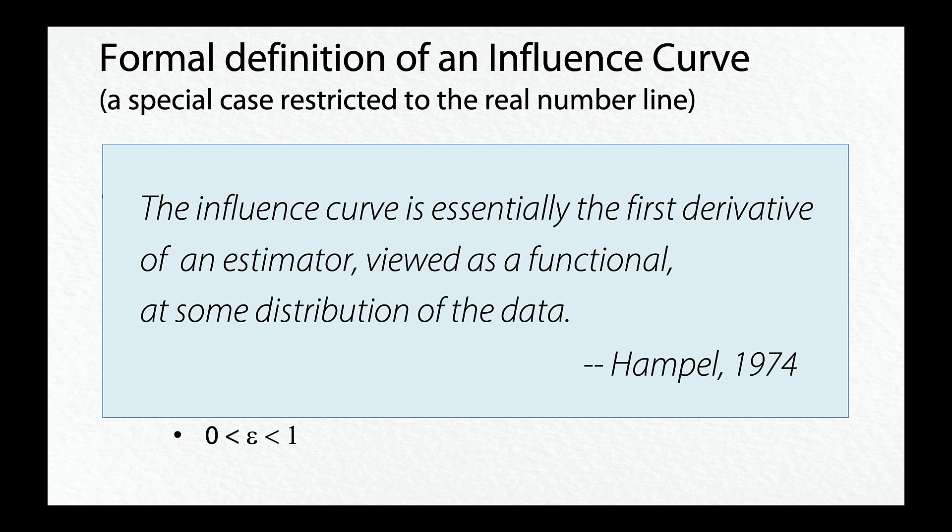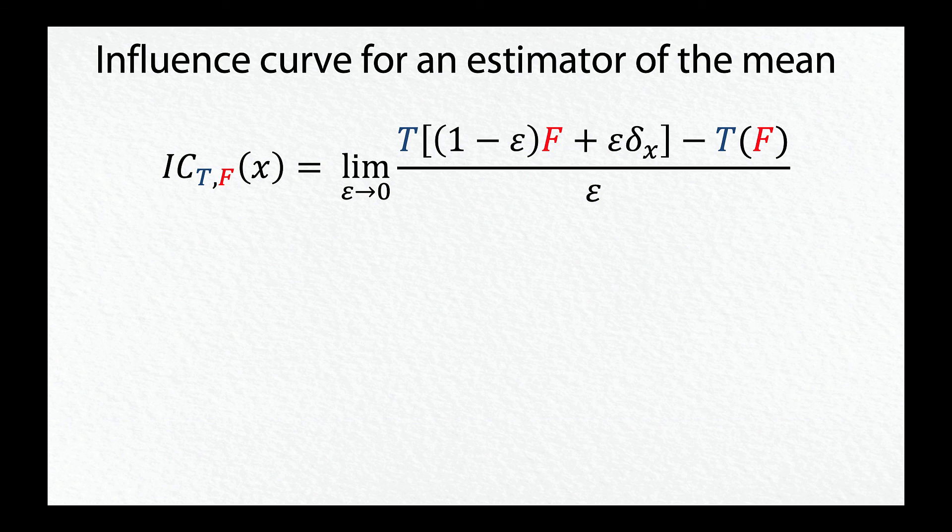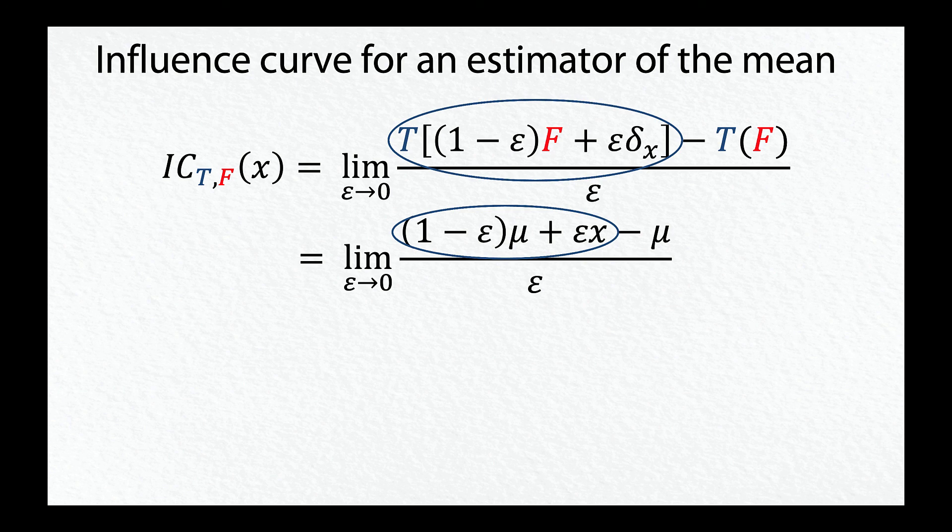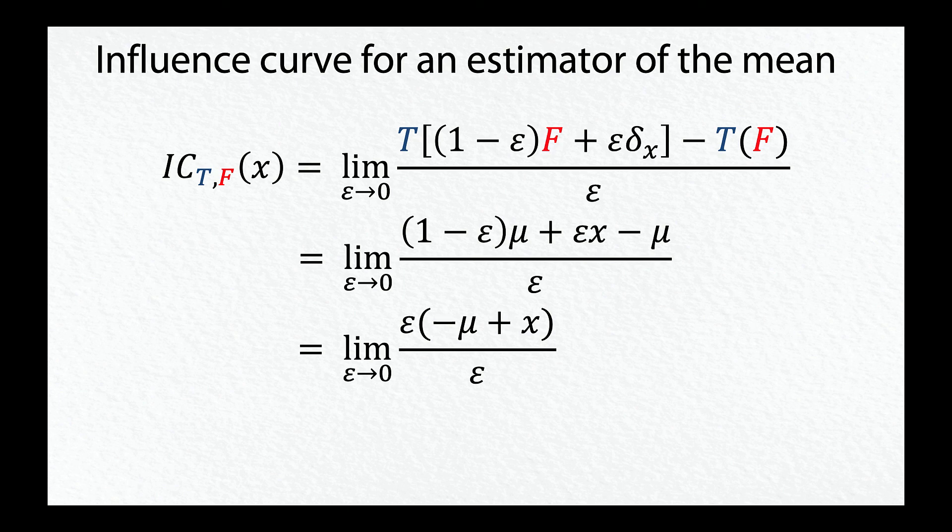With this general definition in place, we can derive the influence curve of our estimator of the mean. The first term of the equation is simply the estimator applied to the mixture distribution. We wrote that as 1 minus epsilon times mu plus epsilon times x in our earlier example, where epsilon was 1/18th. T of f is simply mu. The influence curve for the mean is given by this equation. The numerator is easily simplified, and epsilon in the numerator and denominator cancel, leaving us with x minus mu. If we plotted x minus mu at different points x, we would reproduce our earlier plot of the influence curve of the estimator.